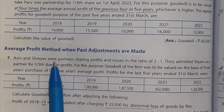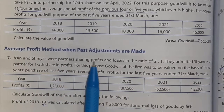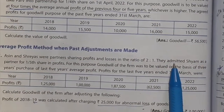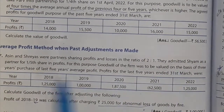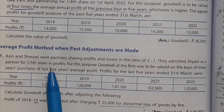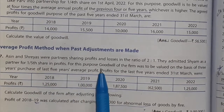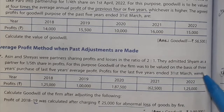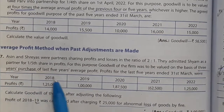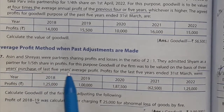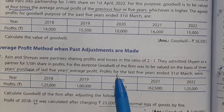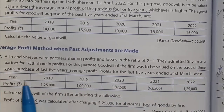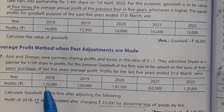Asian and Shreya were partners sharing profits and losses in the ratio of 2:1. They admit Shreya as a partner for one-fifth share in profits. For this purpose, goodwill of the firm was to be valued on the basis of 3 years purchase of last 5 years average profit.